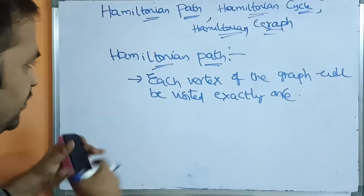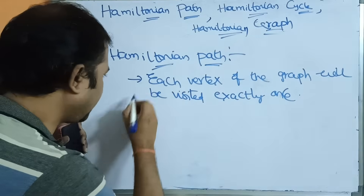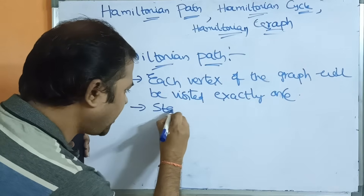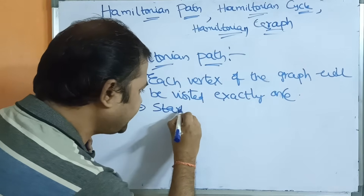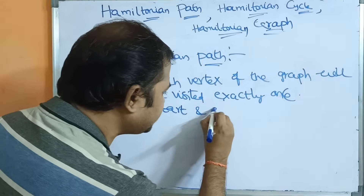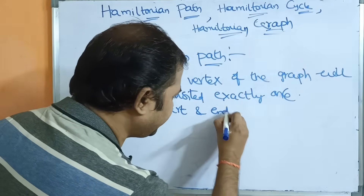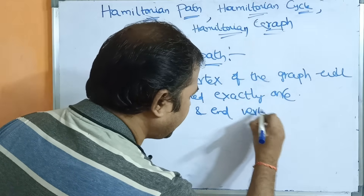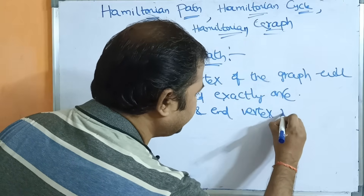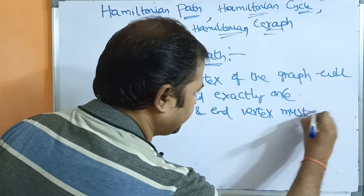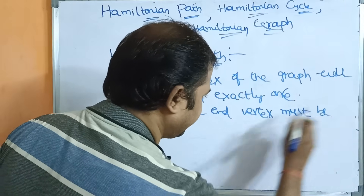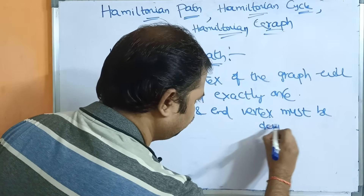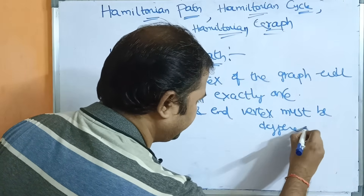So we know what a path is. In a Hamiltonian path, the start and end vertex must be different.